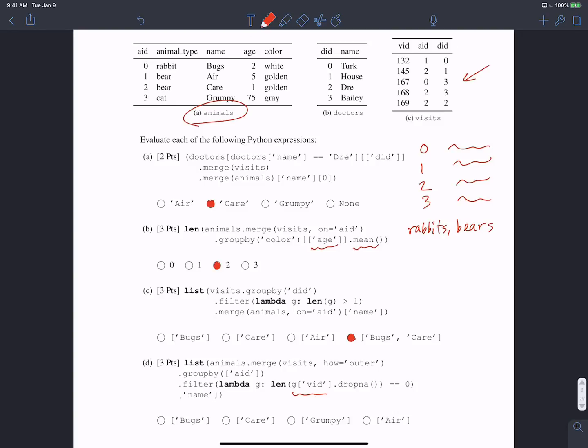Notice animal three, grumpy the cat, never visited the doctor. Since we're doing an outer join, the corresponding value for vid will be null because grumpy did not appear in the visits table. When we drop the null values, there will be no values in the vid column, so when we drop the null values, the length of that list will be zero. The name will be a list of just the single animal who did not go to the doctor any number of times, which was grumpy.